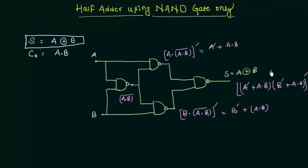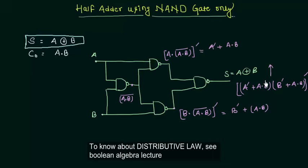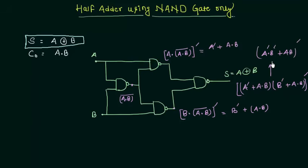You can see that A AND B is present in both terms, so we apply the distributive law. By using the distributive law we get A complement B complement OR AB, and then its complement. This expression — A complement B complement OR AB — is the XNOR operation, so this is A XNOR B. Taking its complement gives us A XOR B.